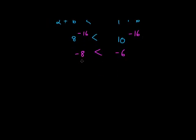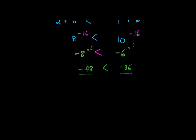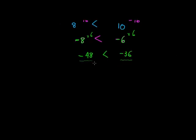Let's look at multiplying. Let's multiply both sides by 6. Negative 8 multiplied by 6 is negative 48, and negative 6 multiplied by 6 is negative 36. Is it still true that negative 48 is smaller than negative 36? Yes it is. So I'm allowed to multiply both sides by a positive number without needing to change the sign.